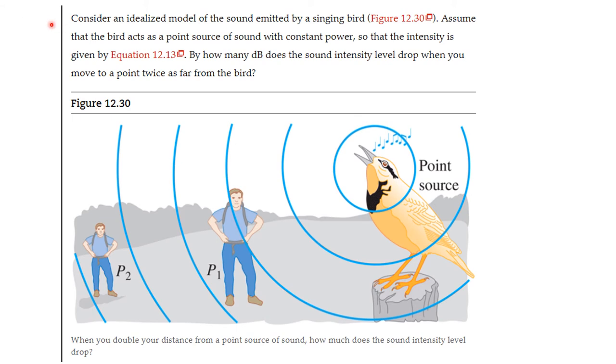Another example. Consider an idealized model of a sound emitted by a singing bird. Now, this bird is a point source and the bird has a certain power associated with their song. Assume the bird acts as a point source of sound with constant power, so that the intensity is given by the equation that i is equal to p divided by 4 pi r squared. How many dB does the sound intensity drop when you move to a point twice as far from the bird? So, you got this guy that's standing at point p1 and listening to the bird. And then he moves to point p2 that is twice as far. So, when you double your distance from the point source of the sound, how much does your sound intensity level drop?